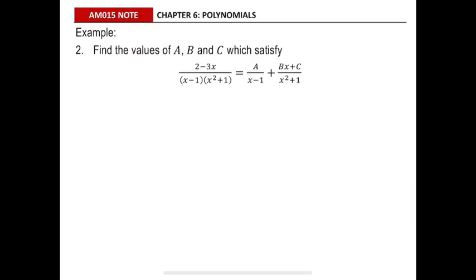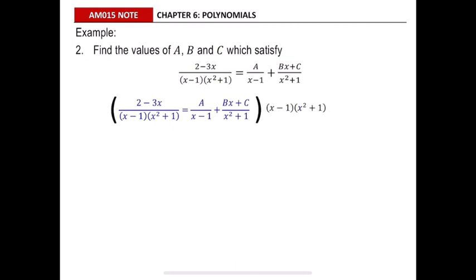In this example we only have to find the values of A, B, and C. The method is the same as the previous example. This fraction also has a non-repeating linear factor and a quadratic factor that cannot be factorized, but it is already stated as a sum of partial fractions. So we multiply the whole equation by the denominator x minus 1 multiplied by x squared plus 1.